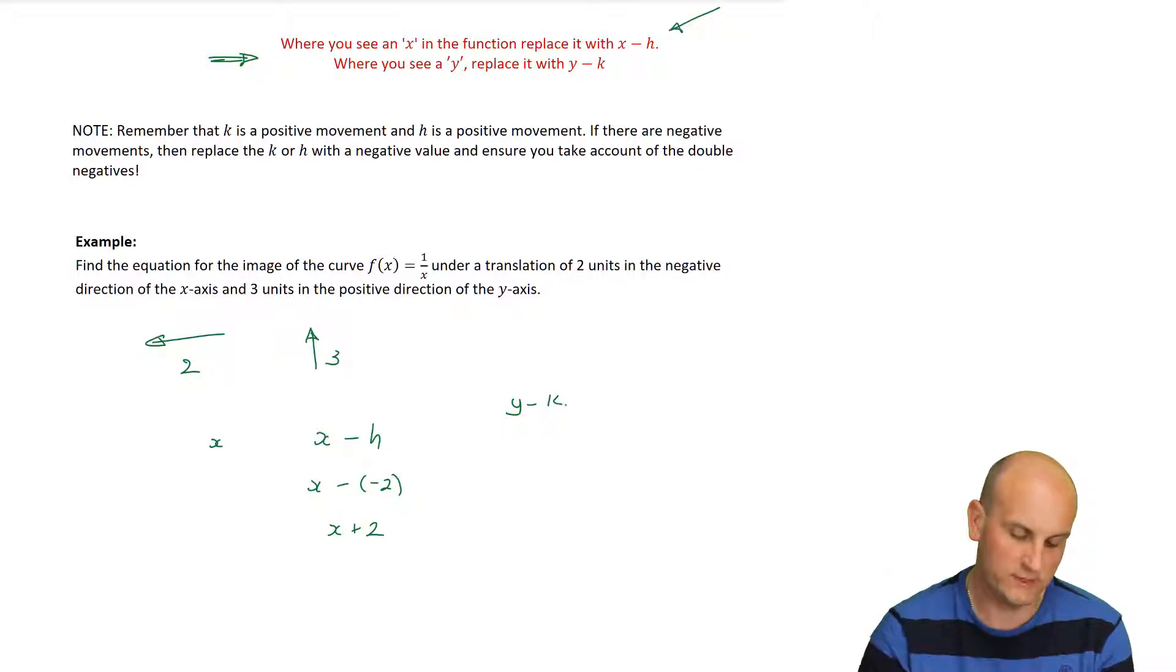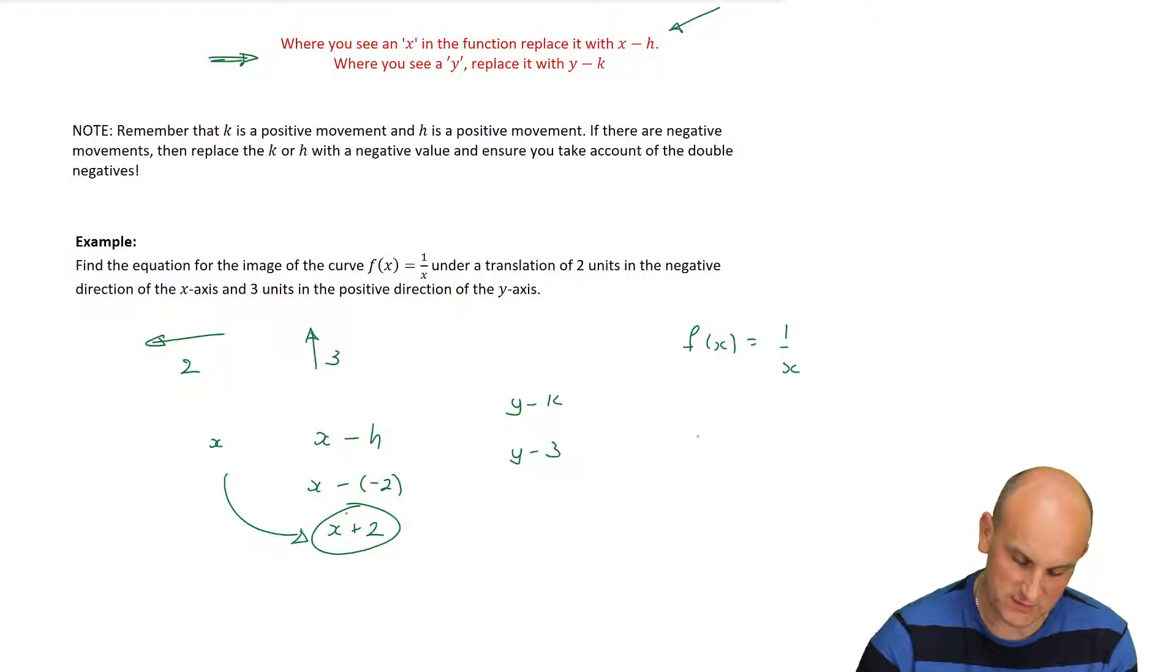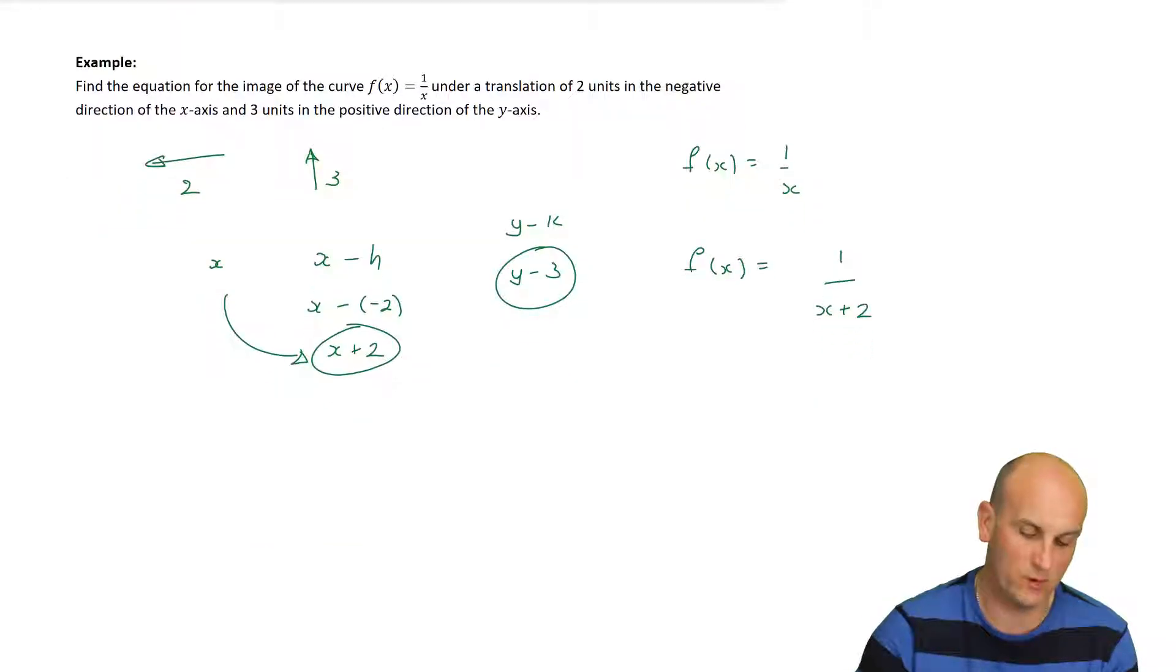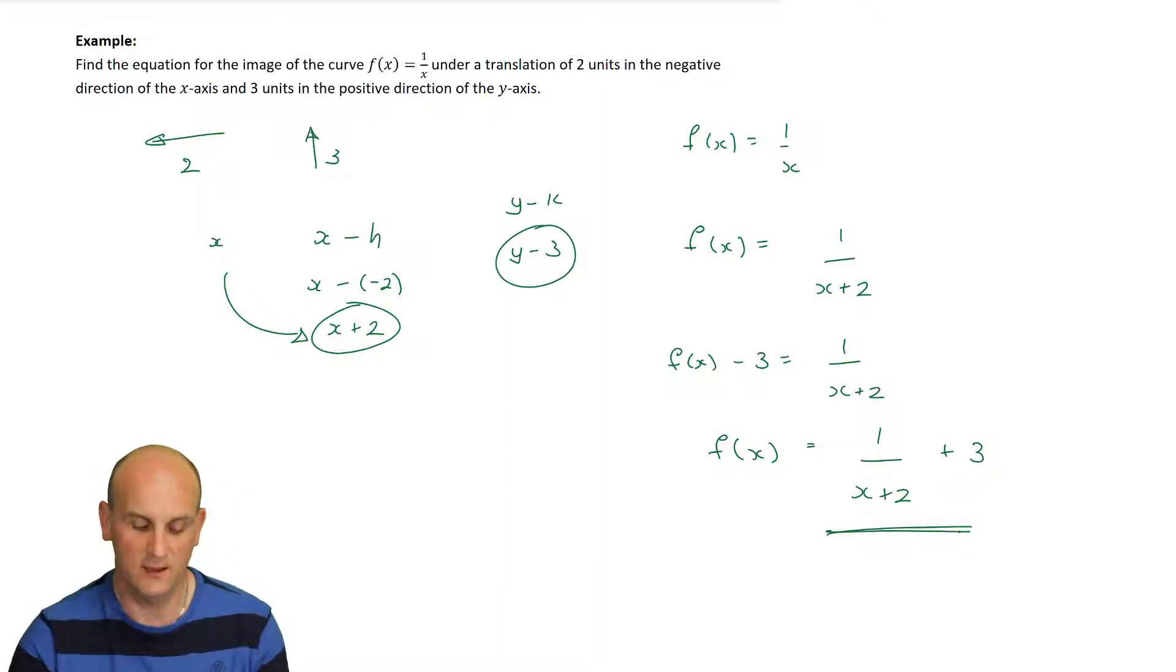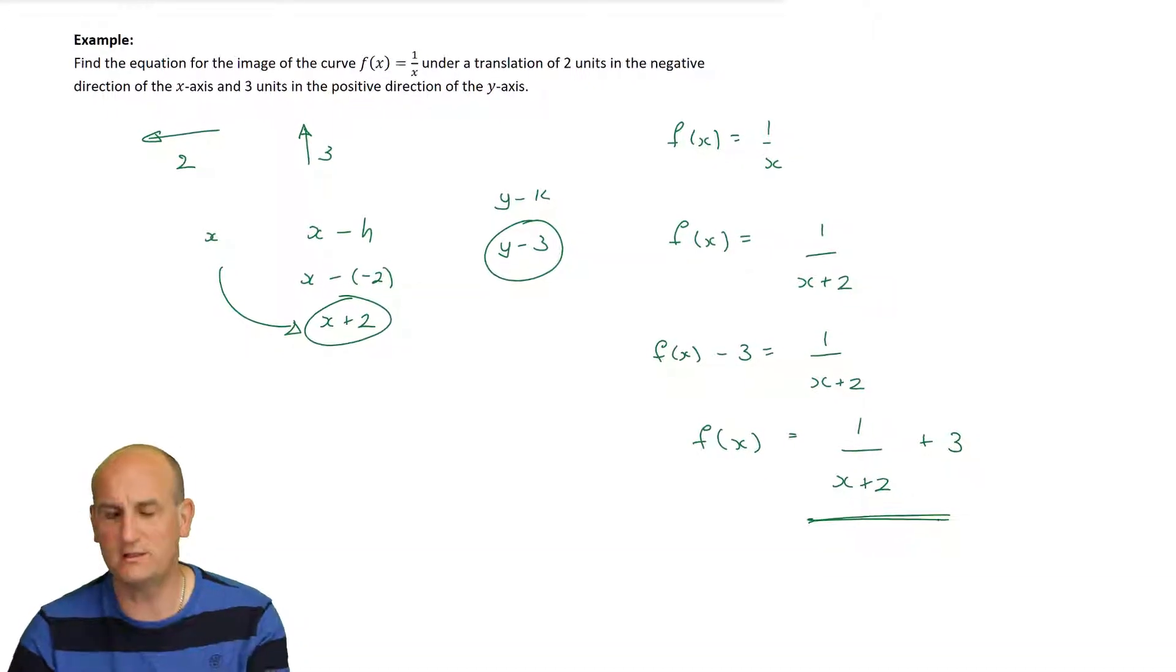And what am I going to replace my y with? Well, y said y minus k, so y minus k. Well, k is a positive movement, 3 units in a positive, easy for you to say, positive direction. So, I'm now going to take my original function of 1 on x, and where I see an x, I'm going to replace it straight away with x plus 2. And when I see a y, I'm going to replace it with y minus 3. Now, obviously, in this situation, we don't have a y, but we do know that f of x is the same as y. So, I'm going to replace that with f of x minus 3 equals 1 on x plus 2. And so, f of x is equal to 1 on x plus 2 plus 3. And there we go. That would be the equation of my image. It gets confusing when you use f of x twice, but we'll deal with it for now.